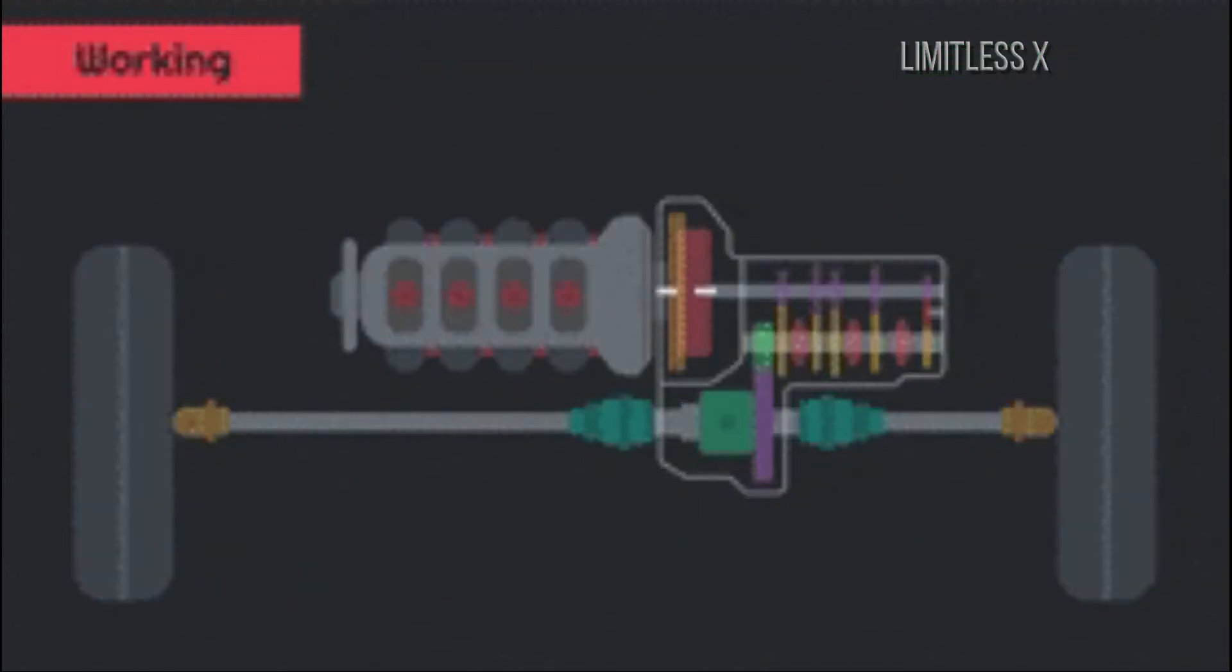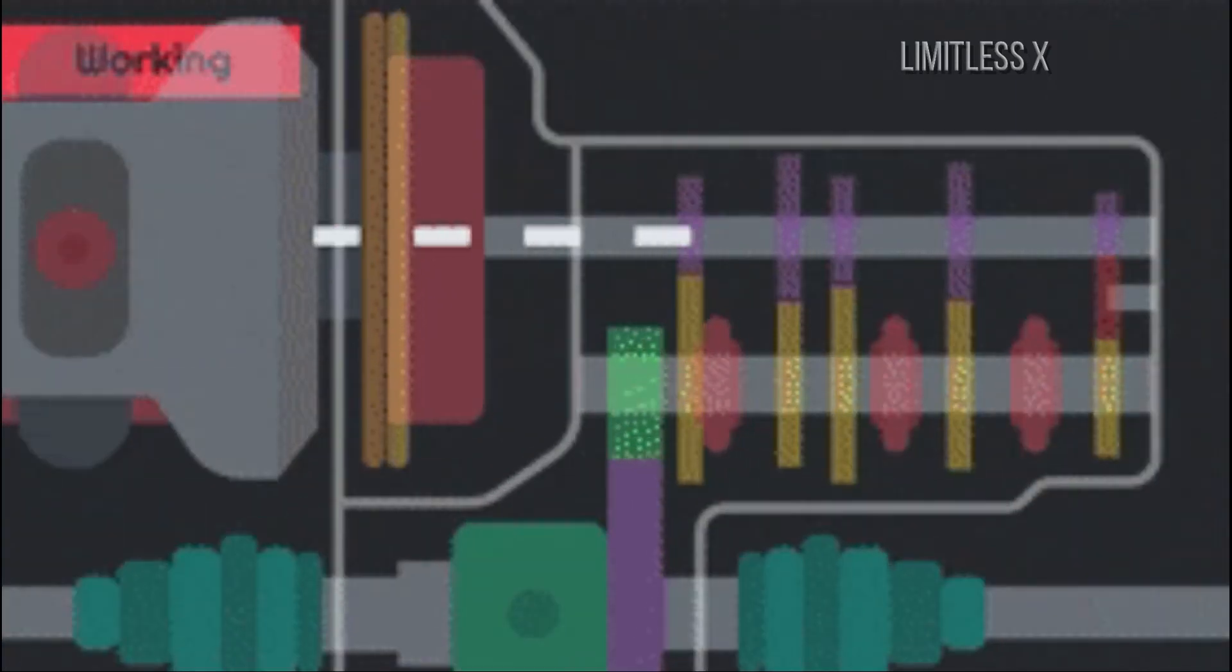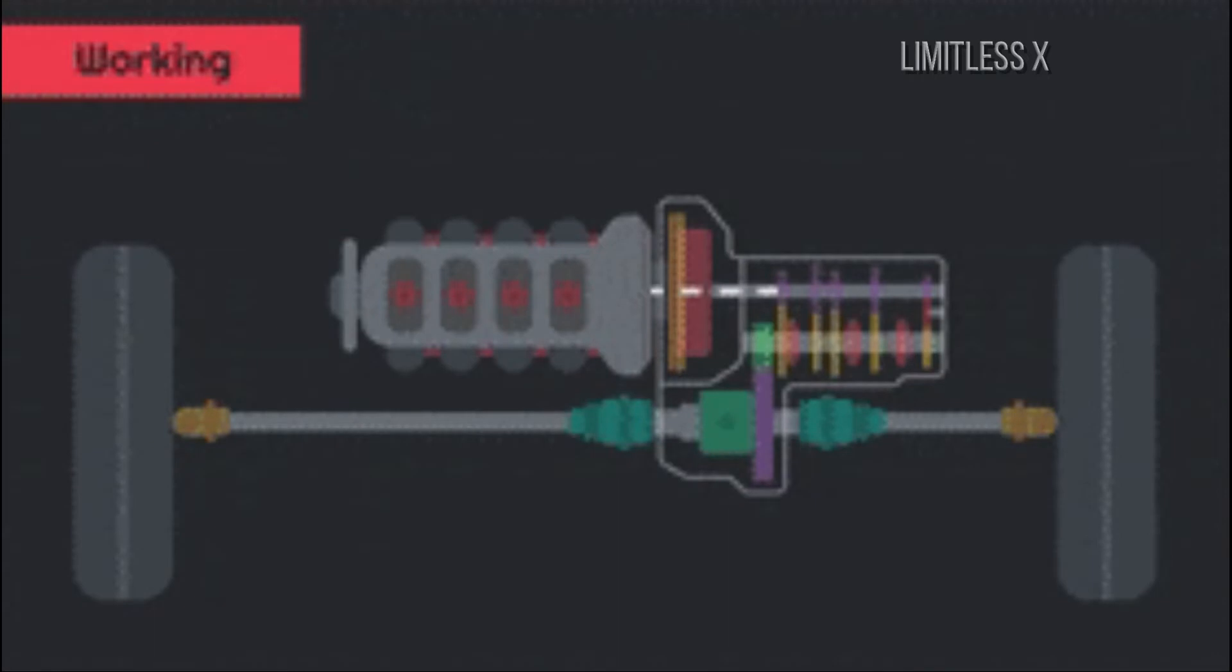In a front-wheel drive system, the engine is laid out in a transverse configuration, that is, it is perpendicular to the axis of the car. This layout enables the engine to connect to the front wheels directly.